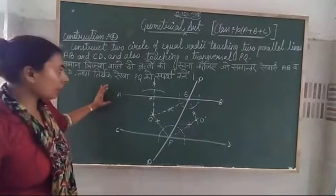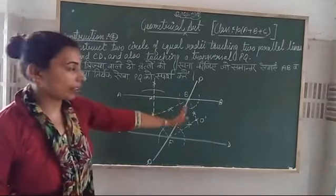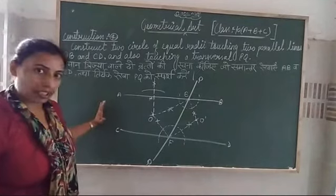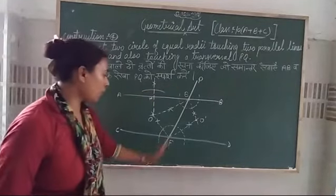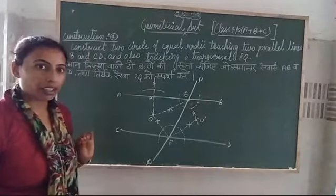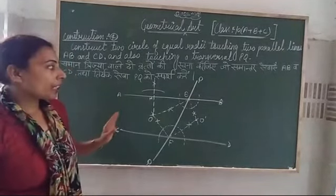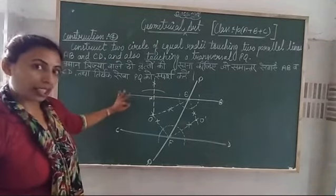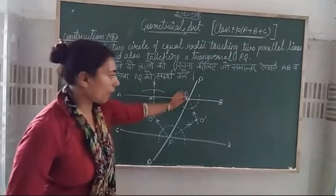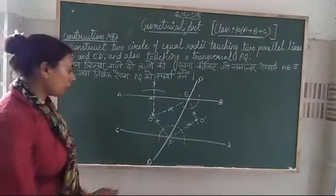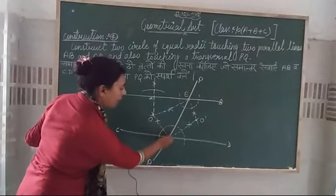Here you can see AB and CD — two parallel lines. AB is one parallel line and CD is one parallel line. These two parallel lines are equal to PQ — you are the same parallel line, the same as PQ.